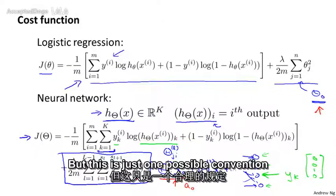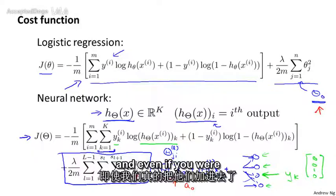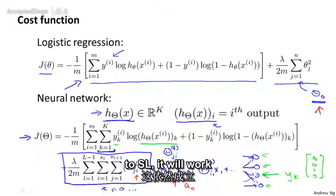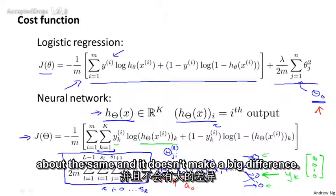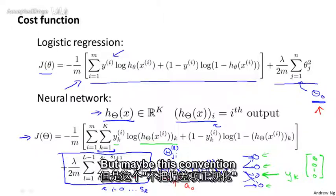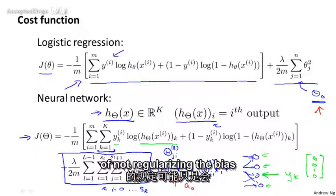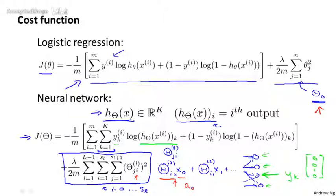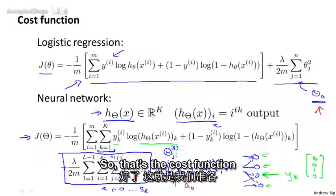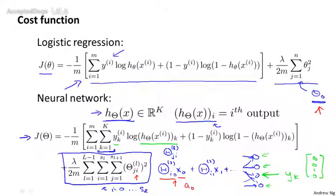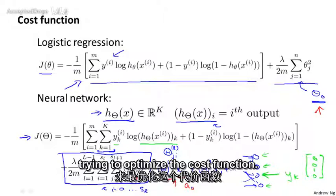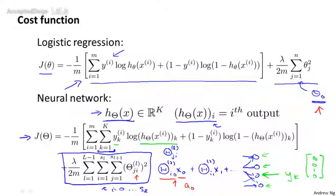But this is just one possible convention, and even if you were to sum over i equals 0 up to S_L, it will work about the same and it doesn't make a big difference. But maybe this convention of not regularizing the bias term is just slightly more common. So that's the cost function we're going to use to fit our neural network. In the next video, we'll start to talk about an algorithm for trying to optimize the cost function.